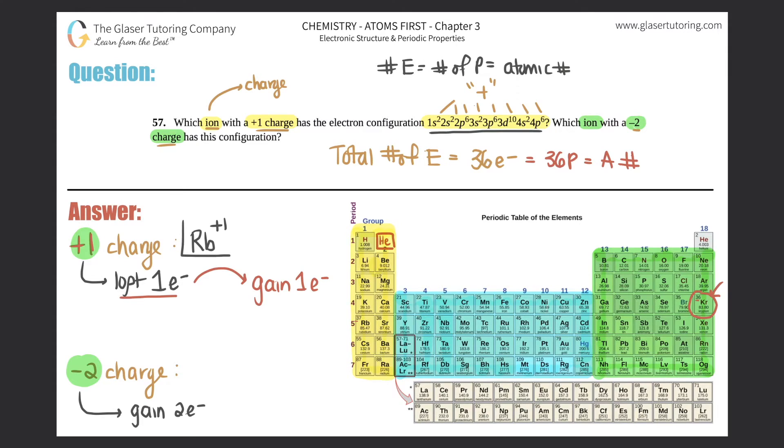Now let's do it for the negative two charge. To find out who it is, undo what's being done. It gained two electrons, so lose two electrons: from 36, jump down to 35 to 34.